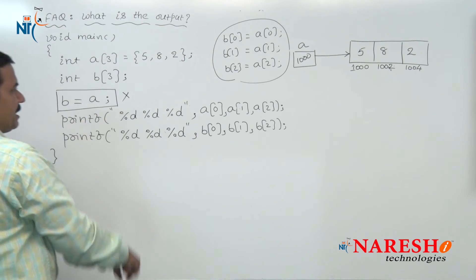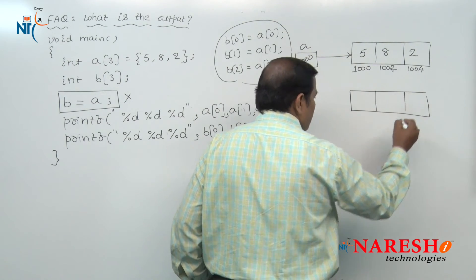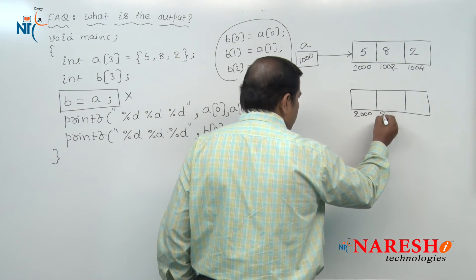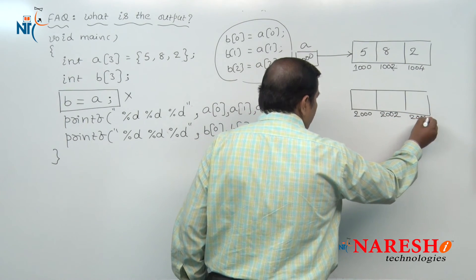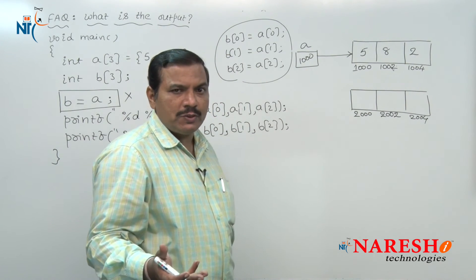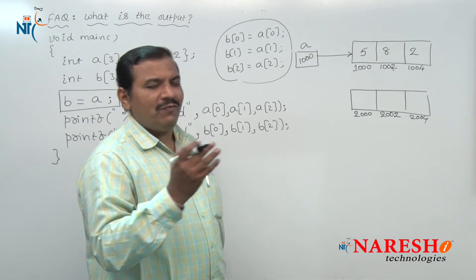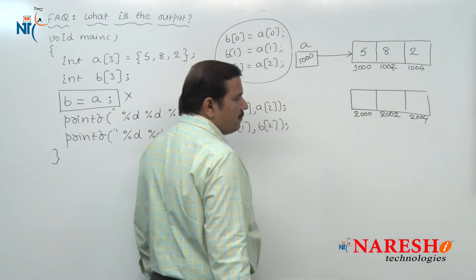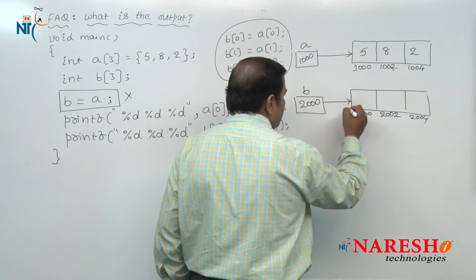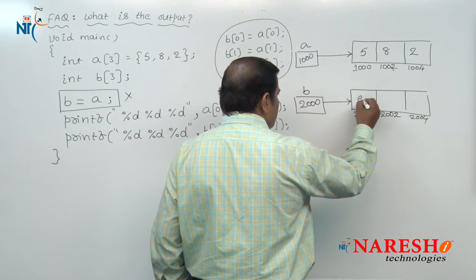Similarly, when the second statement is executed for array B, a sequence of three contiguous memory locations are allocated. Assume that for integer, two bytes of memory is allocated. Let the address of the first memory location be 2000, the second 2002, and the third 2004. The first byte address 2000 is automatically stored inside array name B. Now B points to the memory block allocated to it, and by default garbage values are stored in all these memory locations.